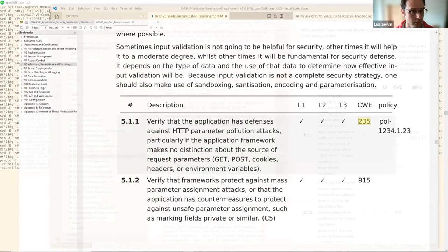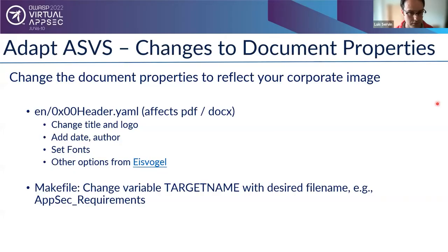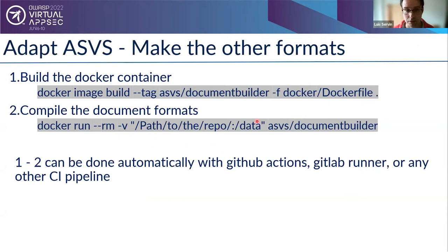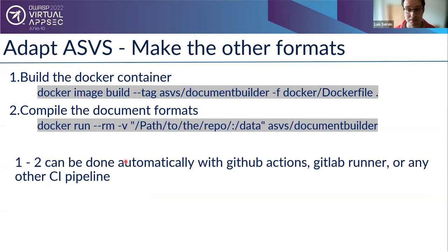There are instructions in the repository on how to build the Docker container. You run 'docker image build,' give it whatever name you want, reference the Dockerfile, and go. When you run it, mount the repository path to '/data.' If you pass no parameters it builds all formats; if you pass 'PDF,' 'Word,' 'Markdown,' etc., it creates just those. Since this is a container, you could run it in a CI pipeline to create your policy document on demand.